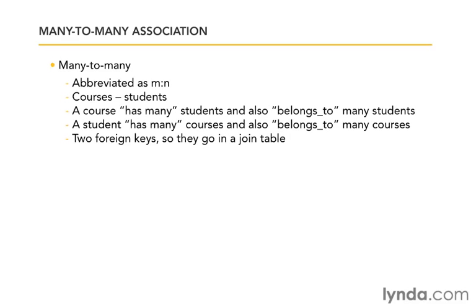The third type is many-to-many relationships. A good example of this would be courses to students. There are many courses and there are many students, and we need to keep track of some combination between them to know which students are in which courses at any one time. We could say that a course has many students and that a student belongs to the course — or we could flip it around and say that a student has many courses and the course belongs to the student. It goes both ways. The foreign keys are going to be a little trickier, because they can't go in either one of our tables — they're going to have to go in a join table that will make a relationship between them.